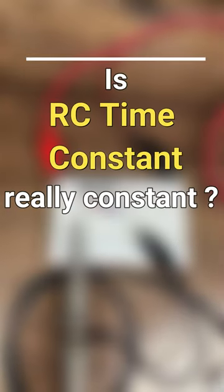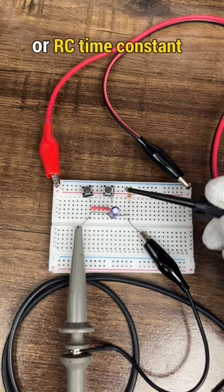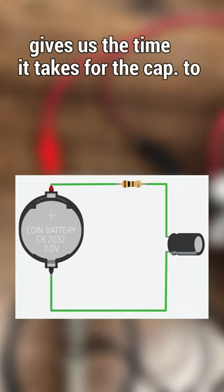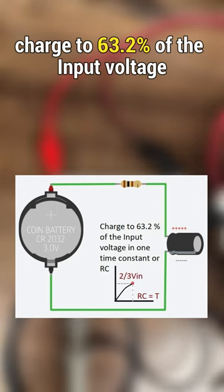Is RC time constant really a constant? So, we know that the product of R and C or RC time constant in a circuit gives us the time it takes for it to charge to 63.2% of the input voltage.